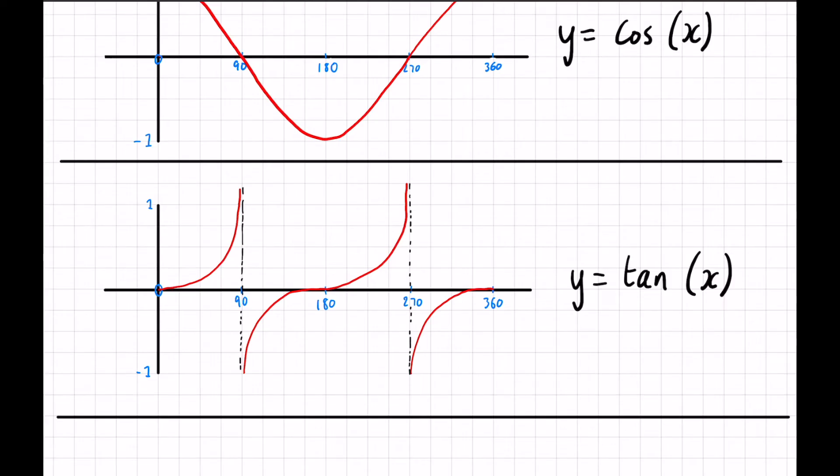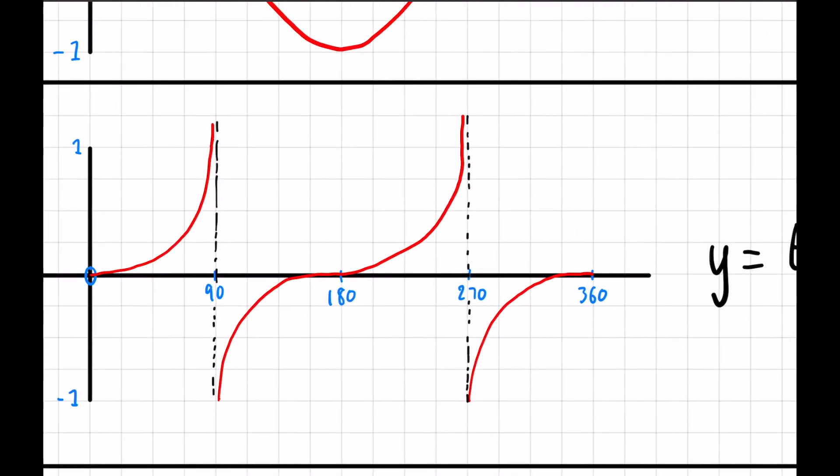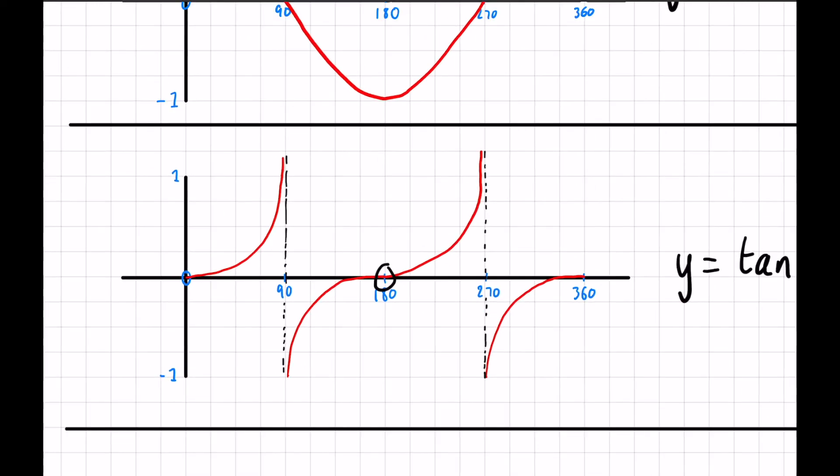And tan x has asymptotes at those values. So an asymptote for those of you that don't know is when a function gets close and close to that value but never actually touches it. So it doesn't have a set value for that number. Again here you can work out certain values fairly easily. For example tan of 180 is going to be 0 because it's on the x-axis. Likewise with 360 and 540 and everything beyond that.